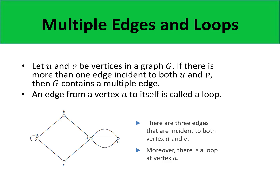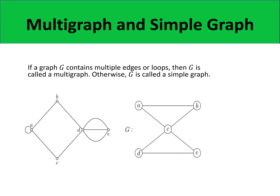Whenever a graph has two vertices connected by more than one edge, then we say that the graph G has multiple edges. Also, if a vertex is connected by an edge to itself, then we call that edge a loop. In the graph on your screens, vertices D and E are connected by more than one edge — particularly three edges — so this graph has multiple edges. Furthermore, vertex A is connected to itself by a loop. Whenever a graph contains multiple edges or loops, we call that graph a multigraph; otherwise, we call the graph a simple graph. The graph on the left is an example of a multigraph and the graph on the right is an example of a simple graph.